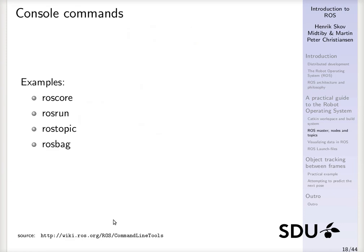When you interact with ROS, you usually do it from the command line. A few commands we'll look into are the following: roscore, which starts up the basic elements of the system; rosrun, which can launch individual nodes; and rostopic, which gives an overview of the pieces of information that can be sent around between nodes.